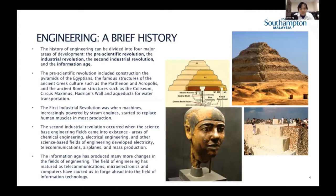I'm sure all of you could name some famous pre-scientific revolution structures, such as the pyramids in Egypt, the Parthenon and Acropolis in Greece, the Colosseum and Circus Maximus in Rome. But above all, I believe the aqueducts would probably rank even higher among the most remarkable achievements of that era.